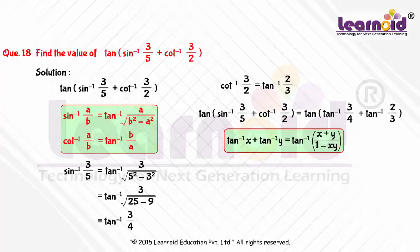We can write the expression as tan of tan inverse 3 by 4 plus 2 by 3 by 1 minus 3 by 4 into 2 by 3.